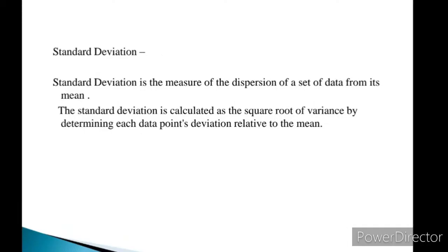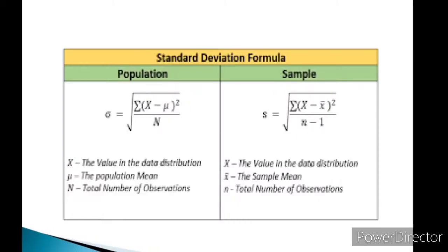After variance, there is standard deviation, which is very important and highly relevant. You may get sample data or population data and have to calculate standard deviation. Standard deviation is the measure of dispersion of a set of data from its mean, and is calculated as the square root of variance by determining each data point's deviation relative to the mean. Take a screenshot of the formula — there are separate formulas for population deviation and sample deviation, and there are good chances of numerical questions from here.